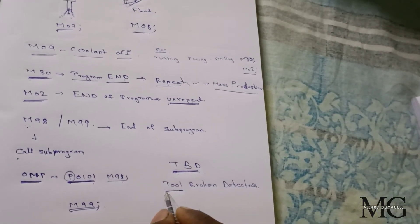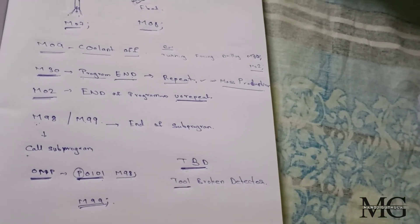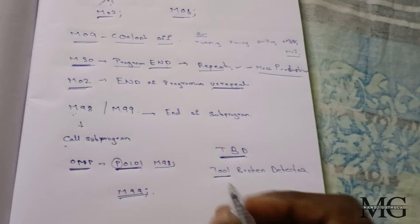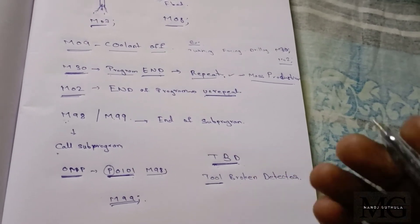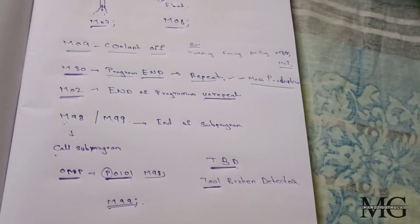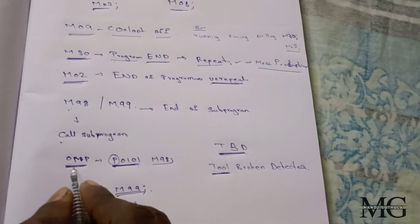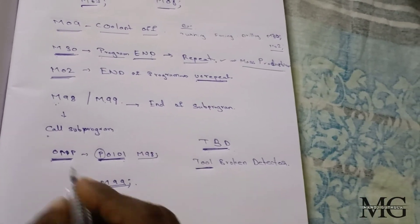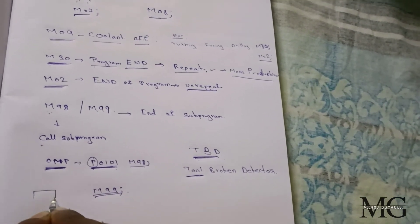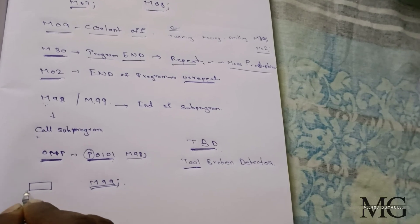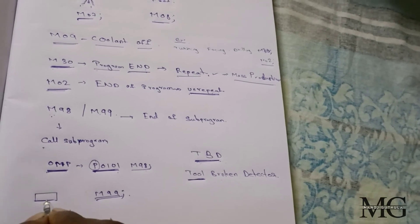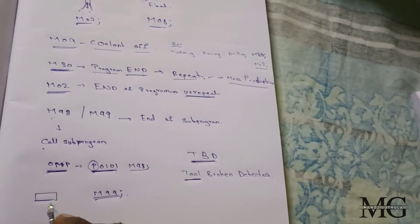Because when we kept in the main program, the length of the program will be increased. To reduce the length of the program, these sub-programs has been kept. Or when we see OMP programs, for the OMP tools is used in submissions to measure the initial dimensions, the cut dimensions or not. It has been measured by OMP tools.